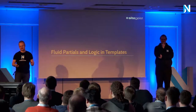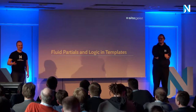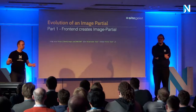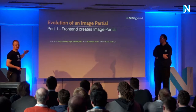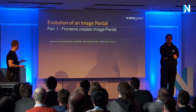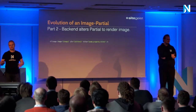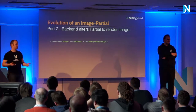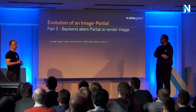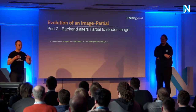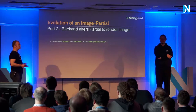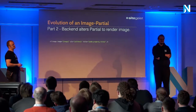Dimitri touched on this already, but it is important. Why is that bad? I want to show you the evolution of a partial. In the beginning, a front-end developer handed over a simple image tag to the backend — very beautiful, just a tag with some attributes. So what can go wrong? The first thing the backend does is switch the image tag through an F:image view helper. By doing so, the partial gets a dependency to the NEOS node domain model, and all the attributes are replaced by curly braces. The front-end developer may still recognize it, but not all of them will.